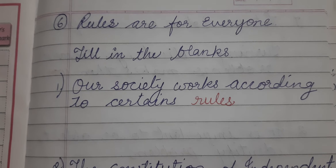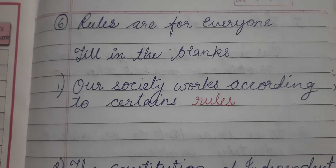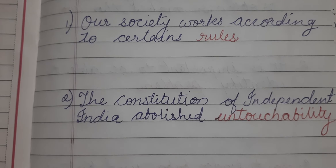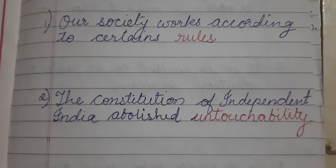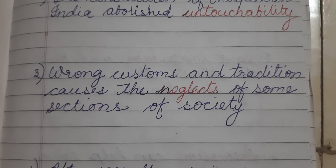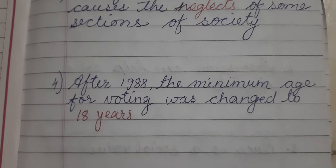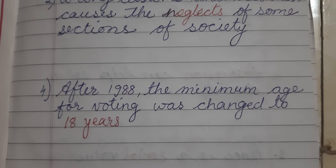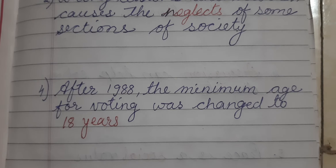Our society works according to certain rules. The constitution of independent India abolished untouchability. The wrong customs and traditions cause the neglect of some sections of society. After 1988, the minimum age for voting was changed to 18 years.